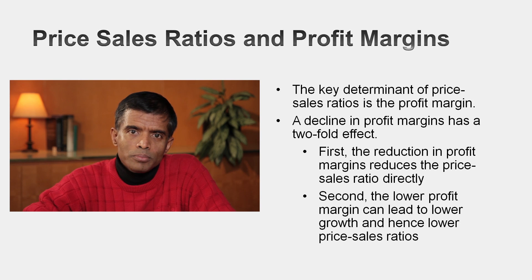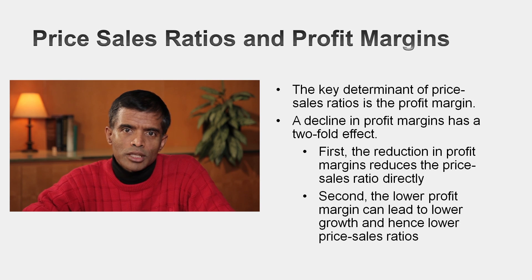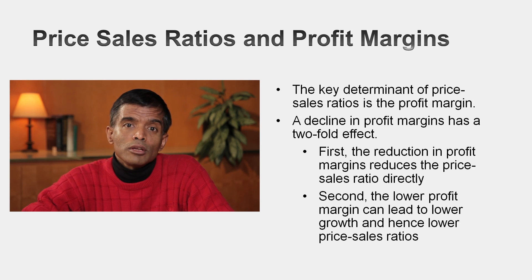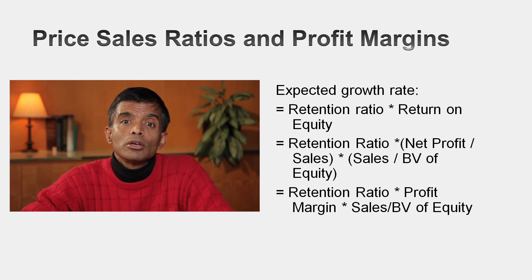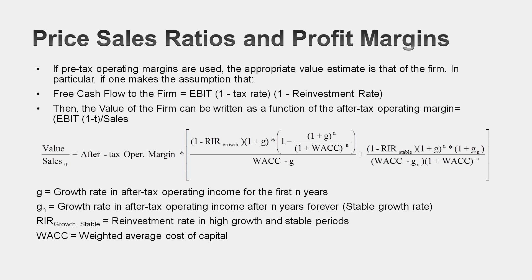The connection between net profit margin and price-to-sales ratios involves a two-fold impact. First, when a company's margin drops, you'll see an immediate drop in the price-to-sales ratio. But there's also an indirect effect: if your net profit margin gets lower, your return on equity drops, and your return on equity drops, your growth rate drops. So when you buy a company with a high price-to-sales ratio and high net profit margin, pray that margin stays high — because if it starts decreasing, your price-to-sales ratio will fall more than proportionately.